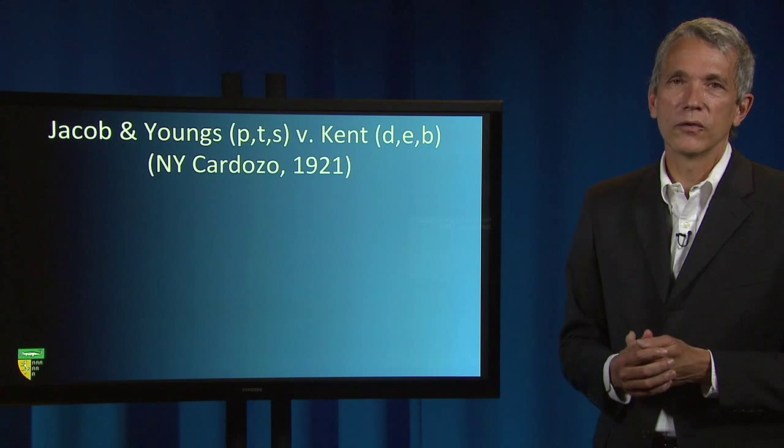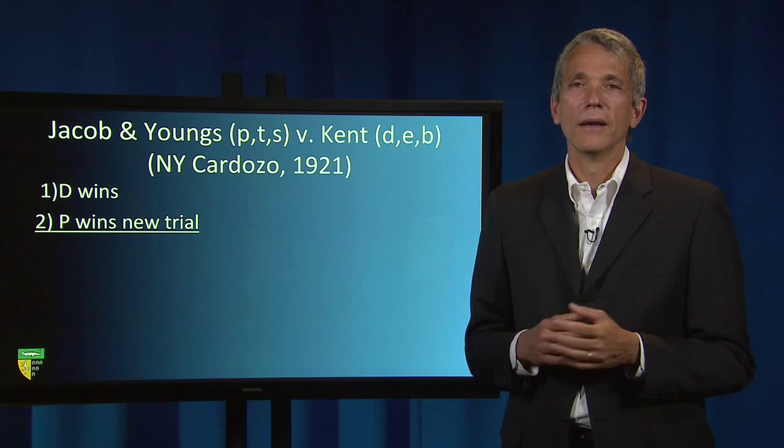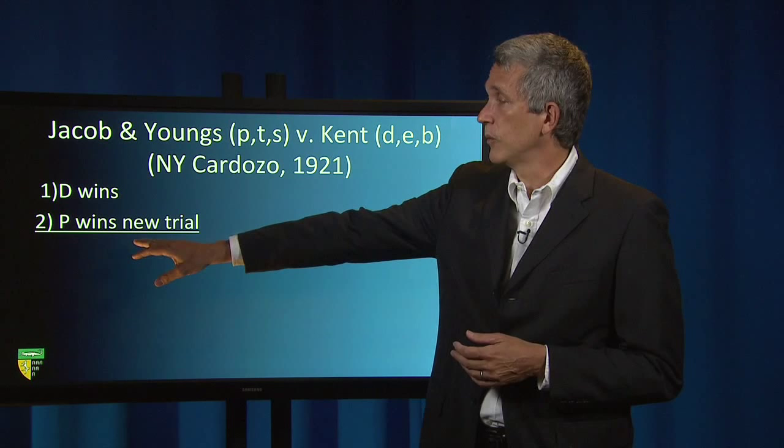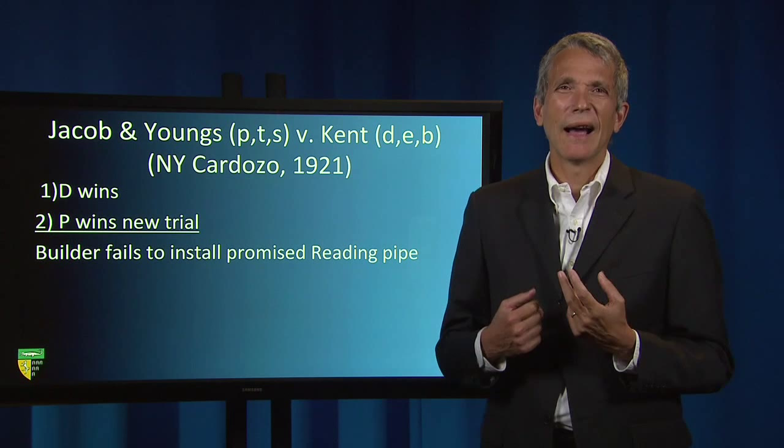That's what you learn from just the first line. Second, summarize the procedural history by indicating who won below. In this case, I know that in the initial trial court the defendant won, and from the case I just read — which is underlined — I know that the plaintiff won a new trial.